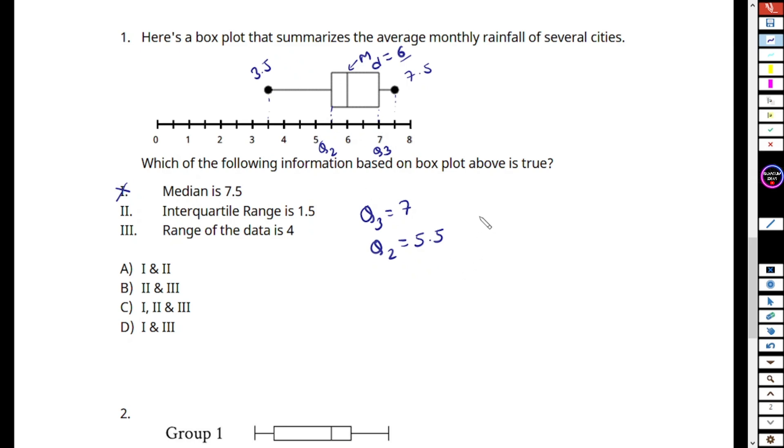What is our interquartile range? Interquartile range, IQR, is basically Q3 minus Q2, so this is equals to 7 minus 5.5, that is equals to 1.5, so option 2 is correct. What is the range of the data? Let's check.